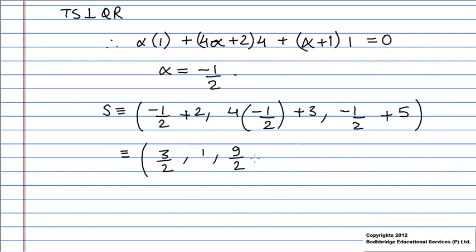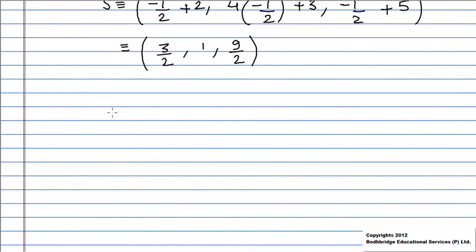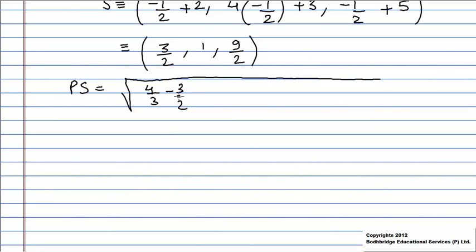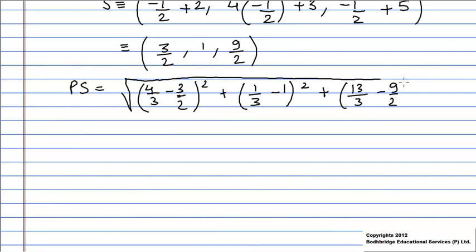Now we know the point P and the point S, so the length of the segment PS is given by √[(4/3 - 3/2)² + (1/3 - 1)² + (13/3 - 9/2)²]. Solving this, the length of the segment PS is equal to 1/√2. So option A is the correct answer.